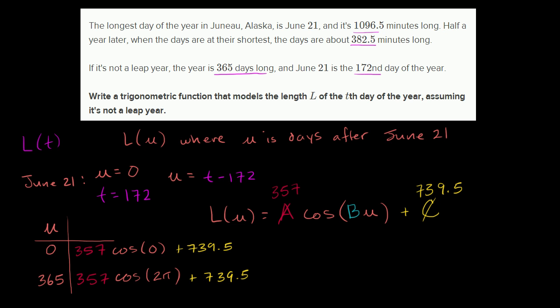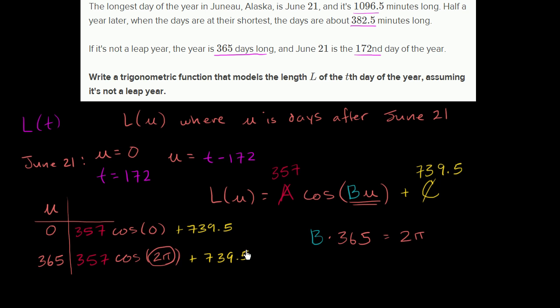So let's write that down. B times 365, that's the input into the cosine function, needs to be equal to 2π. Or B is equal to 2π over 365.